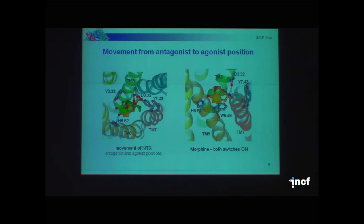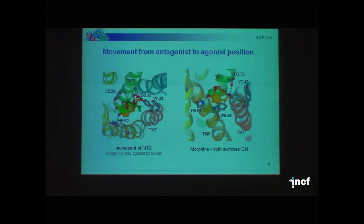We also modeled morphine, the typical ligand of the mu-opioid receptor. We found that morphine, the smallest ligand we analyzed, activates both switches: the ionic bridge and the rotamer toggle switch. It involves movement of side chains — not only tryptophan but also histidine located on another turn of the helix. This is called sometimes the extended rotamer toggle switch.